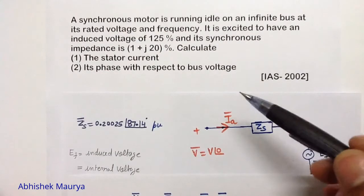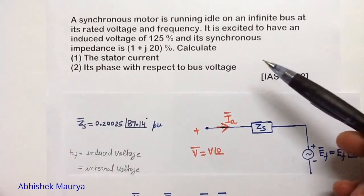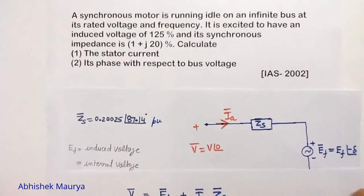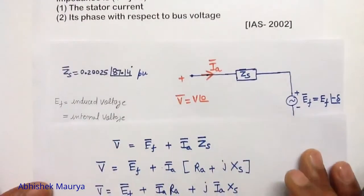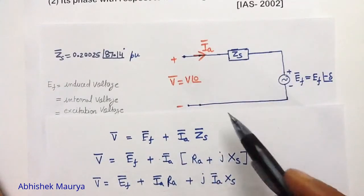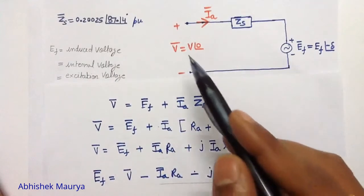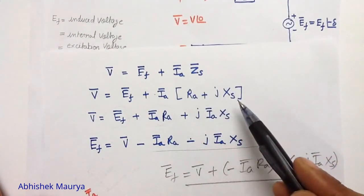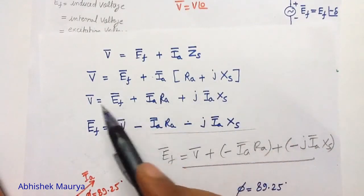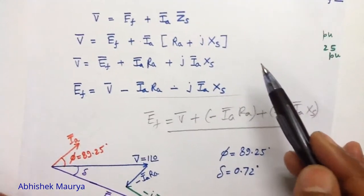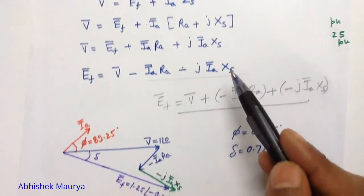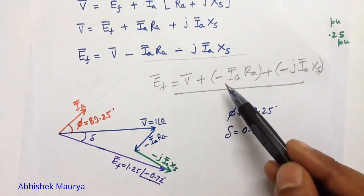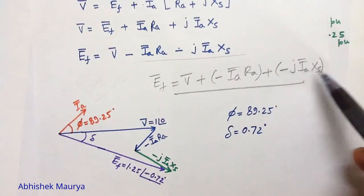I want to draw the phasor diagram of the synchronous motor corresponding to this problem, although it is not asked by the examiner. To draw the phasor diagram, we make the KVL equation: V equals EF plus IA times ZS, where ZS equals RA plus J times Xs. Solving this gives a third and fourth equation. The fourth equation is: EF equals V plus minus IA RA plus minus J IA Xs.